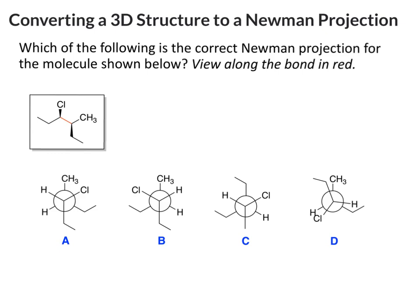Here's an example of converting a 3D structure to a Newman projection. What you should do is take a second, pause, and see if you can figure out which of the answers are correct.